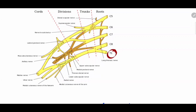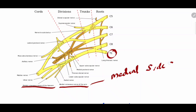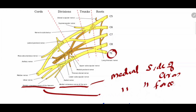The medial cord of the brachial plexus has five branches. Two of those branches are the medial cutaneous nerve of the arm and the medial cutaneous nerve of the forearm. The medial cutaneous nerve of the arm supplies the medial side of the arm, and the medial cutaneous nerve of the forearm supplies the medial side of the forearm. That means T1 supplies the medial aspect of the arm and forearm.